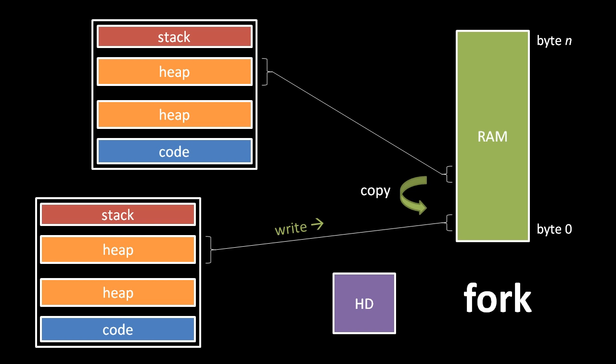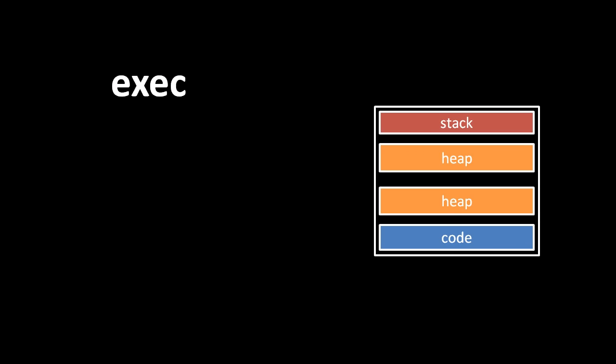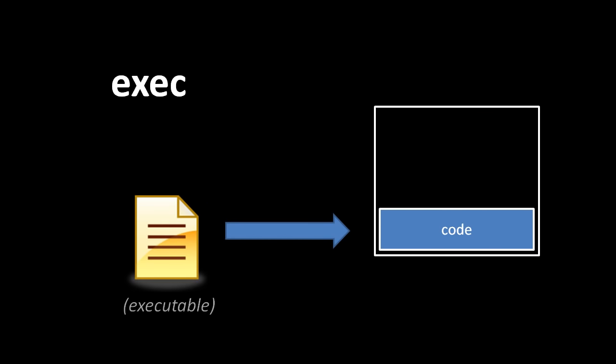The fork system call creates a fork of an existing process, but that brings along all of the already loaded code — you're not really changing the program, just splitting an existing program into two separately running copies. To actually load a new program, we use the exec system call, which does not actually create a new process. What exec does is replace the current program in the process with a new program, discarding the entire address space and creating a new one by loading in the new code from some executable file. After an exec, the process has a new code section, new data sections, no heap section yet, and a totally empty stack.